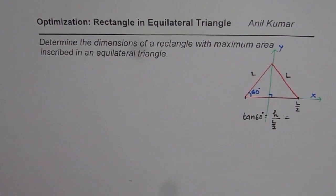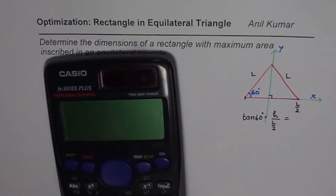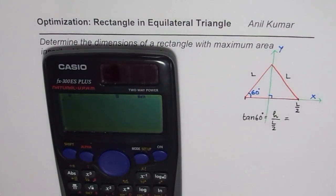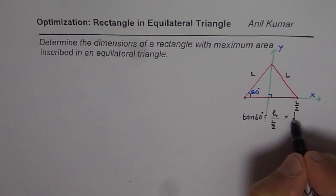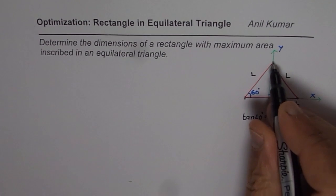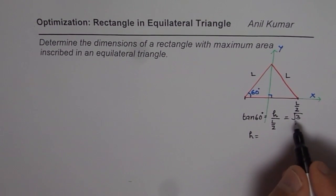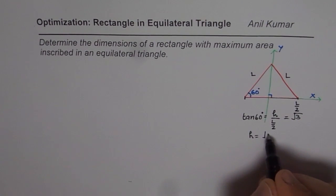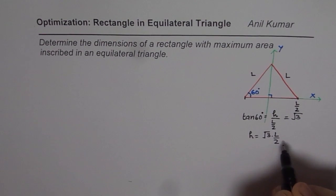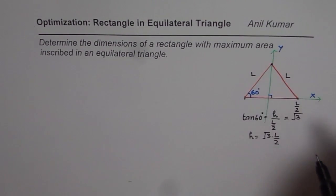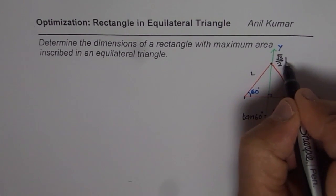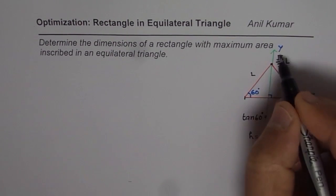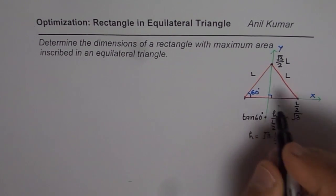Tan of 60 is square root of 3 — you can use special triangles to confirm this directly. So the height H of this triangle equals square root of 3 times L over 2. That means this point on the Y axis will be at square root of 3 over 2 times L. So the height along the Y axis is H = (√3/2)L.